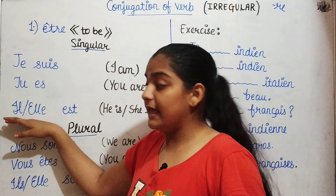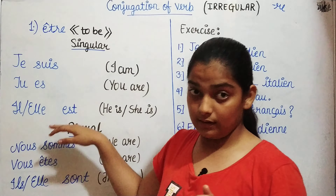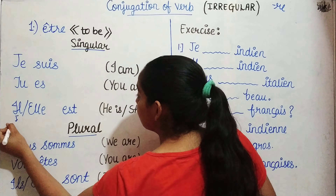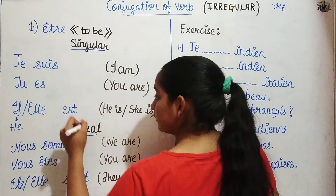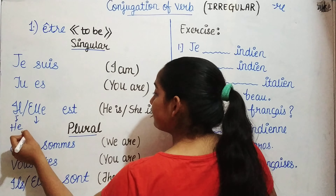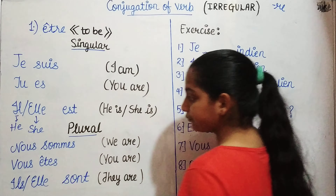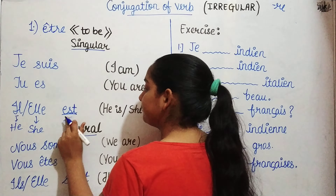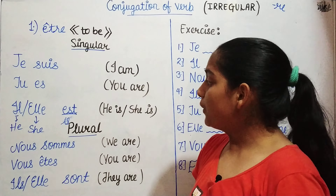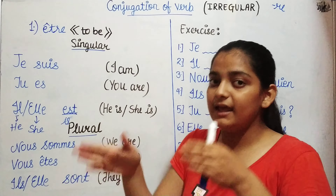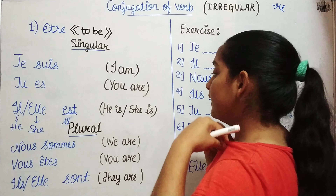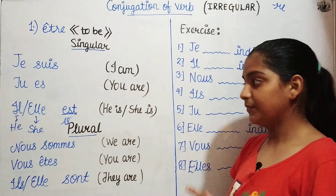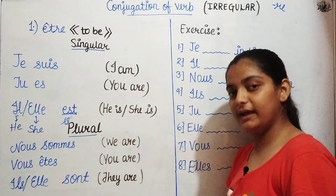Third is il est, which means 'he is.' And elle est, which means 'she is.' So il est means he is, and elle est means she is. Let's repeat them once: je suis, tu es, il est, elle est.